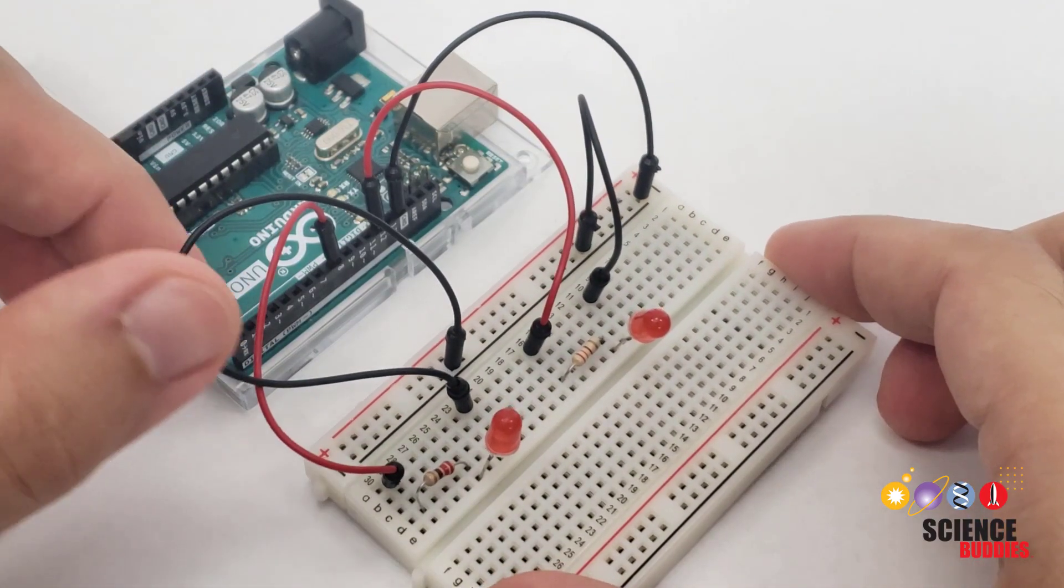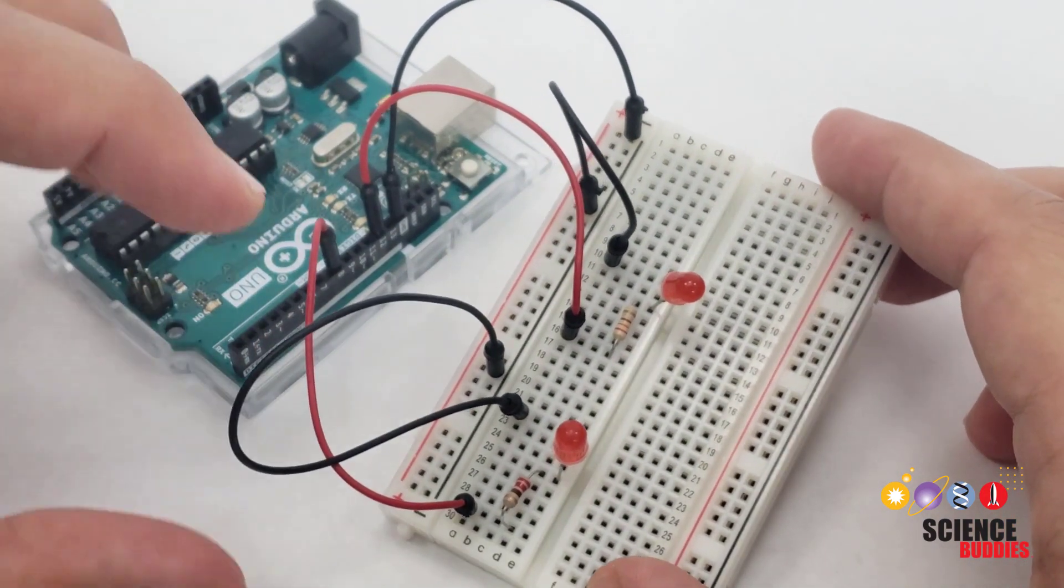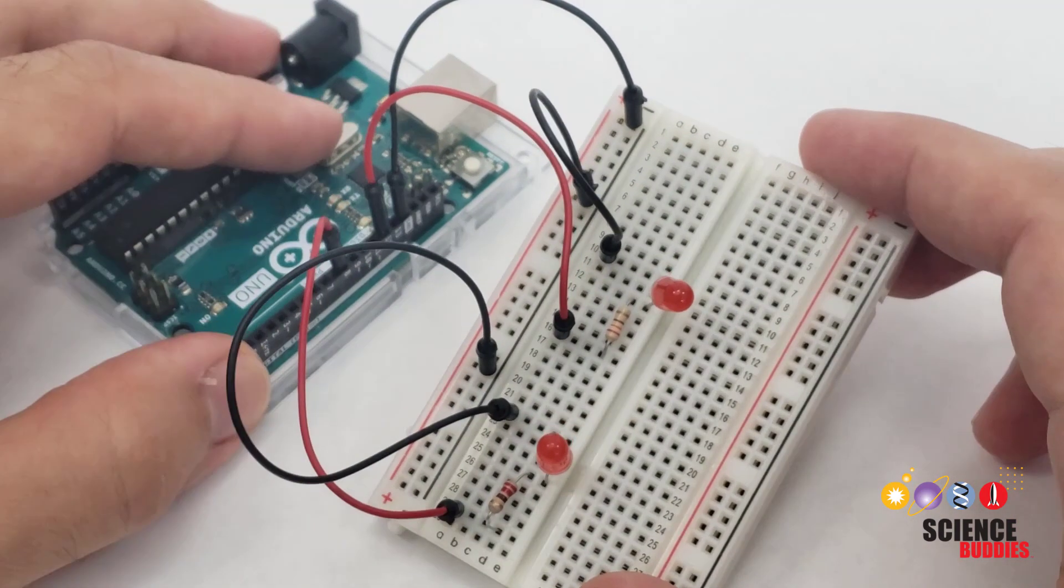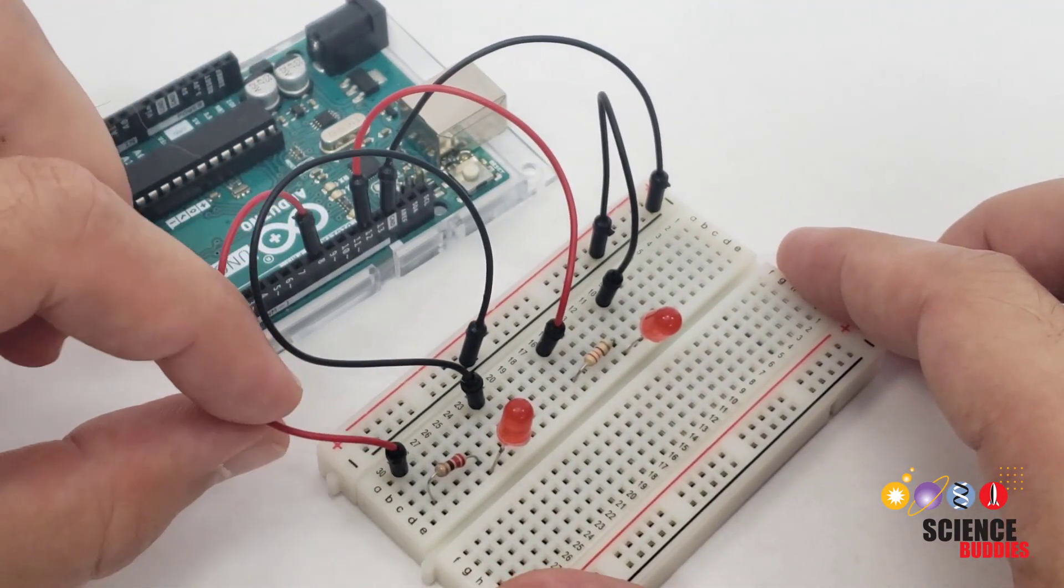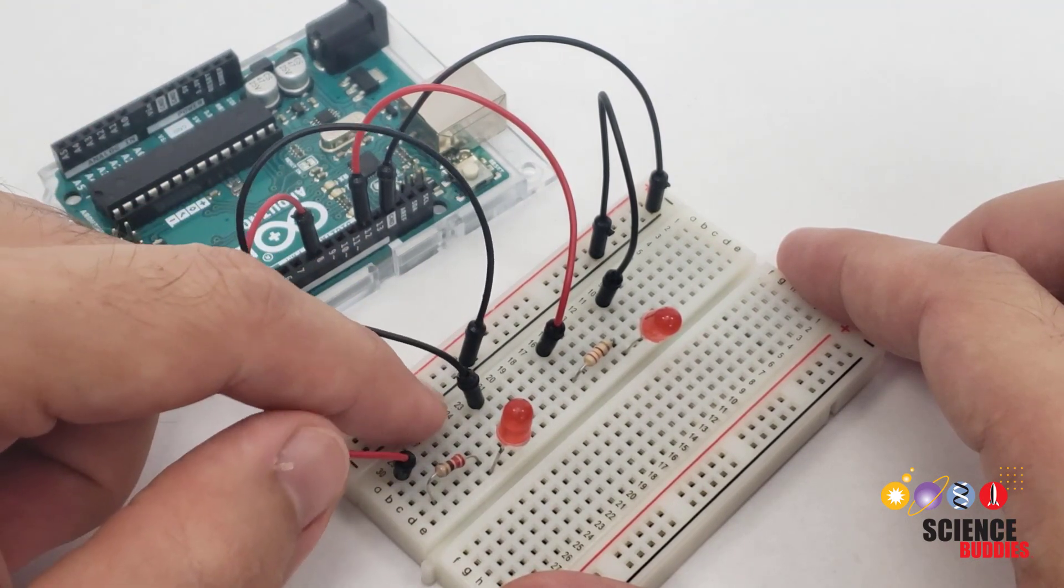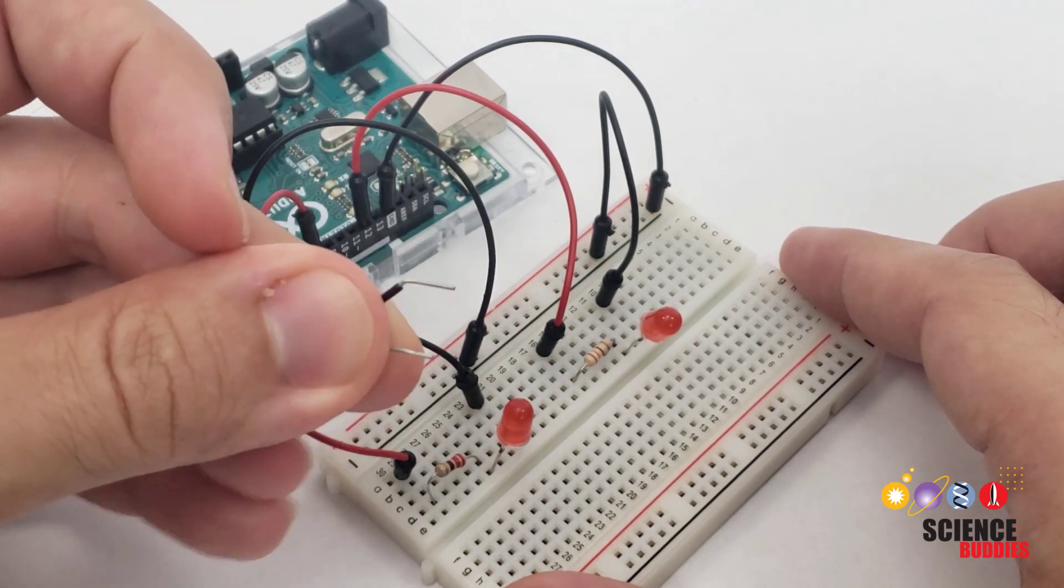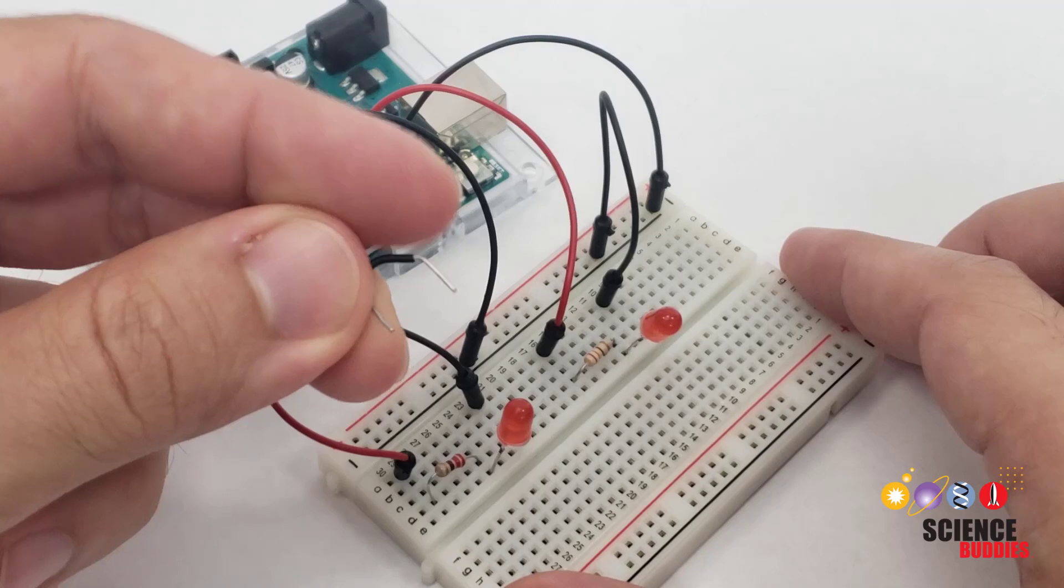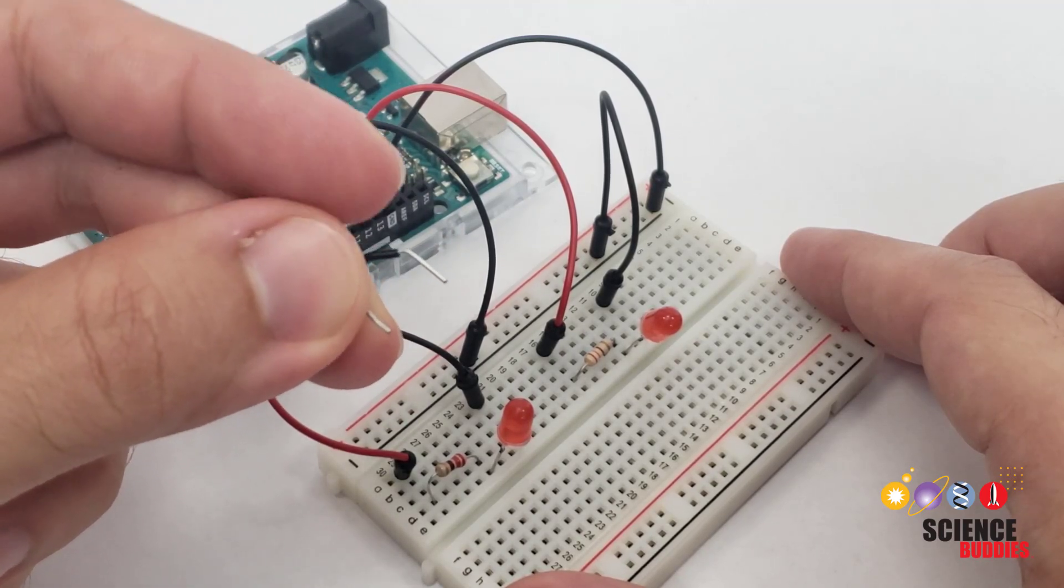One other thing to note here is that these long wires tend to get kind of messy as you build more complex circuits. You can wind up with a tangled nest of wires that is hard to trace and debug. So, while these wires are good for making the connections to the Arduino, they're not always the best choice for the breadboard to breadboard connections. That is where shorter jumper wires like this come in handy. You can either purchase these in a kit or buy a spool of wire and wire strippers and cut them yourself.